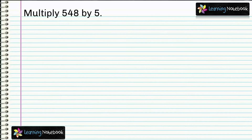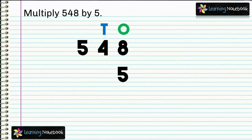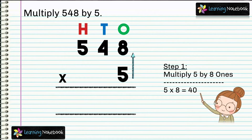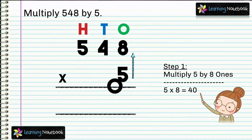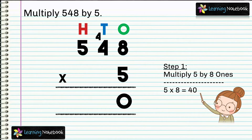So let's multiply these numbers. First write them in columns. Now in step 1, we will multiply 5 by 8 ones. 5 into 8 equals to 40. Students, we need to regroup 40. 40 means 4 tenths and 0 ones. So let's carry 4 to the tenths place and 0 comes in the answer.